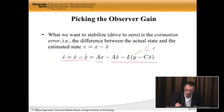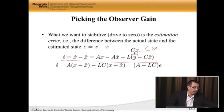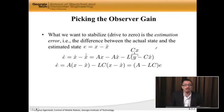Now, y is equal to C times x, right? So what I actually have here is e dot being A times (x minus x hat) minus LC times (x minus x hat). But x minus x hat is e, so e dot is (A minus LC) times e. This is the dynamics of the estimation error. We don't know e, but we know that this is the dynamics.